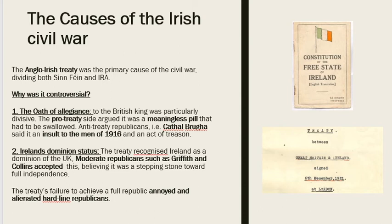The pro-treaty politicians — those in favour of the Anglo-Irish Treaty — argued it was meaningless, just a pill they had to swallow. Meanwhile, anti-treaty politicians, for example Cathal Brugha, believed it was an insult to the men of 1916 and an act of treason. They asked: why would I swear an Oath of Allegiance to a British King that I fought to break free from? So the Oath of Allegiance was very divisive and divided people in Ireland greatly.